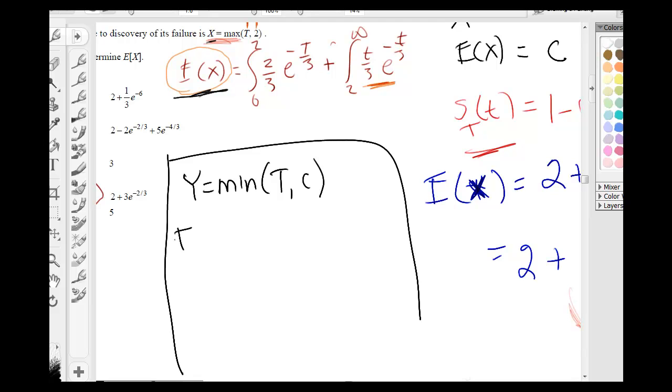If y is the minimum of t and c, then E(y) is going to be the integral from 0 to c of the survival function of t. And that's it.